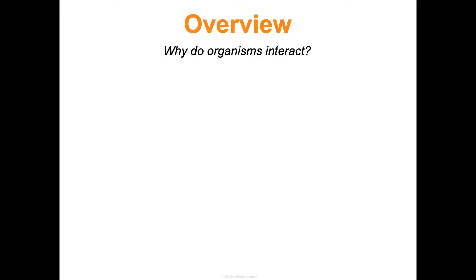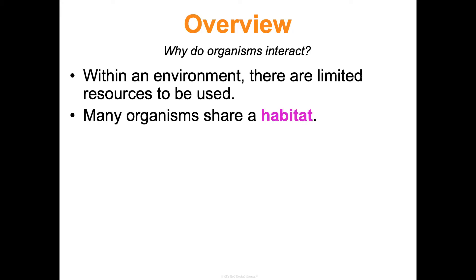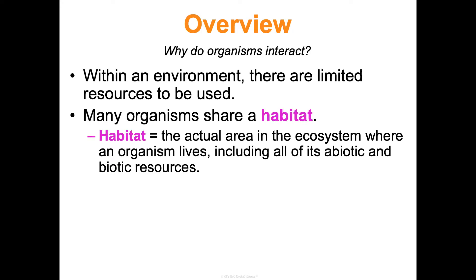Why would organisms interact in the first place? Within an environment, there are limited resources to be used, so there are going to be a lot of different ways that they interact over those resources. Some organisms may even share a habitat, which is the actual area where they live, including all of the living and non-living things in that given area.